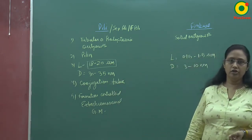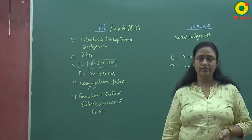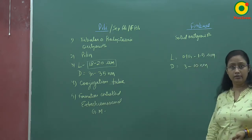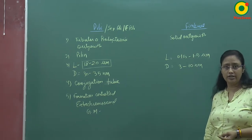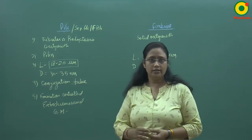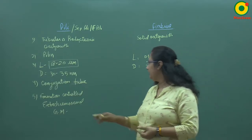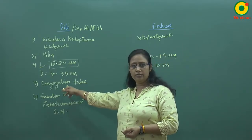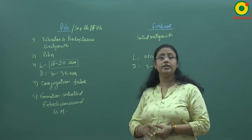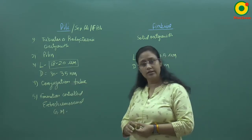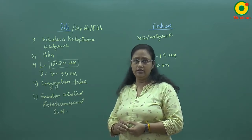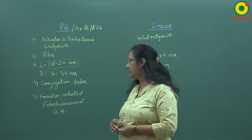Pili helps in the formation of the conjugation tube, which plays a very important role in the process of genetic recombination — the transfer of genetic material from one bacterial cell to another. We will discuss the formation of the conjugation tube and this process of conjugation later in this chapter, when I discuss parasexuality.